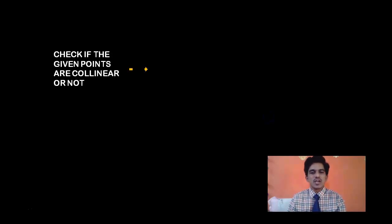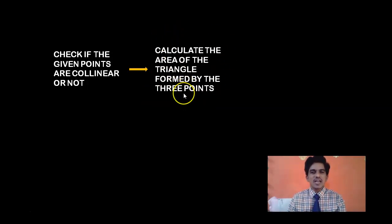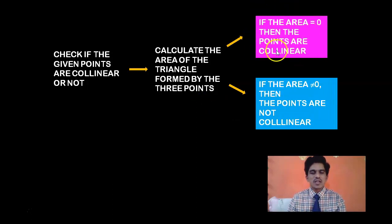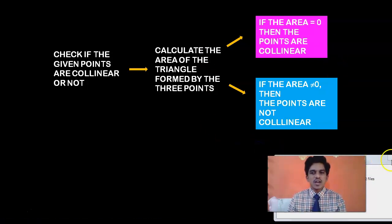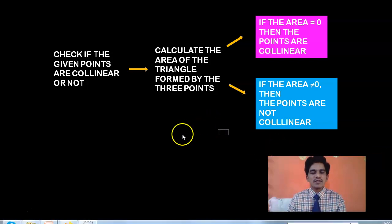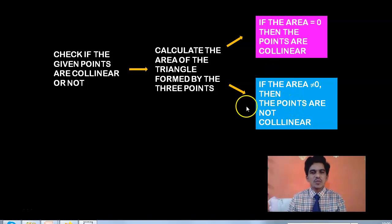We have to discuss these two concepts because using this formula connected with collinear points, you will be asked two types of problems. First: check if the given points are collinear — calculate the area of the triangle using the three points. If you get area = 0, the points are collinear. If you get a non-zero area such as 15, 14, or 6.5, then the points are not collinear.